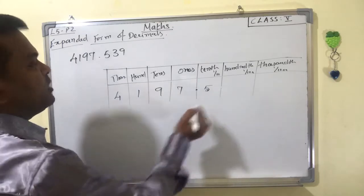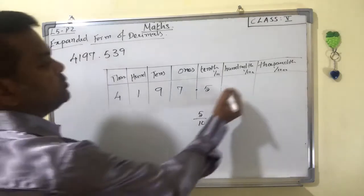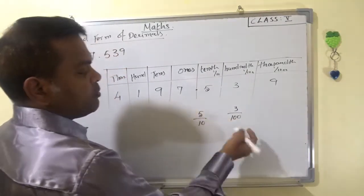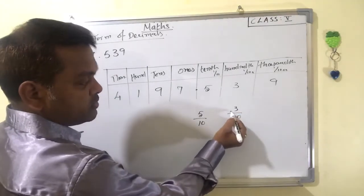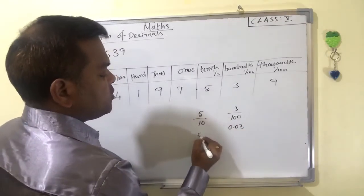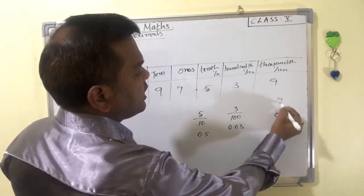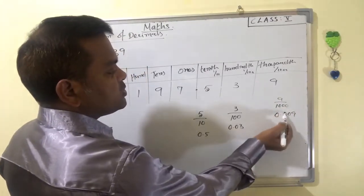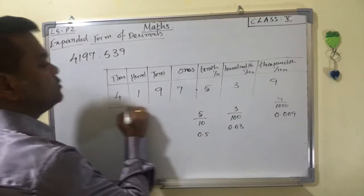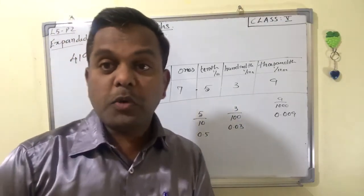Next, the place value of three is the hundredths place, so three becomes three-by-one-hundred. For 3/100, move the point two decimal places to the left: 0.03. And nine is in the thousandths place, so nine becomes nine-by-one-thousand. For 9/1000, move the point three decimal places to the left, adding two zeros: 0.009.